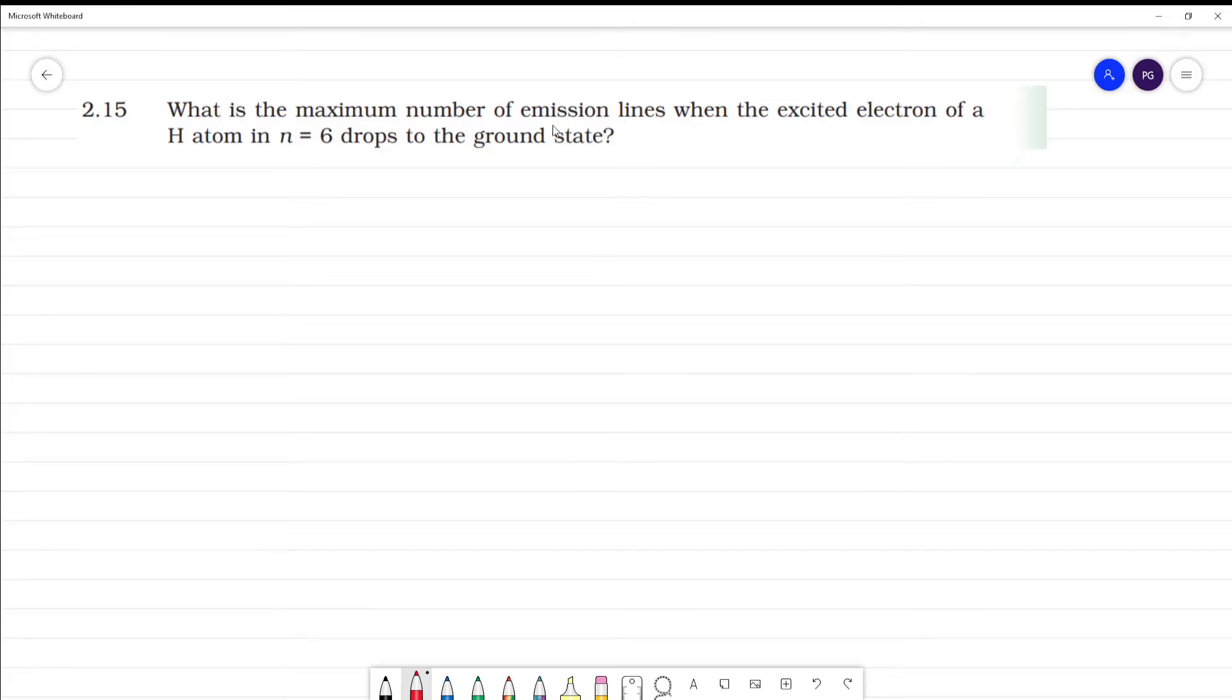What is the maximum number of emission lines when an excited electron of a hydrogen atom in n equals 6 drops to ground state?